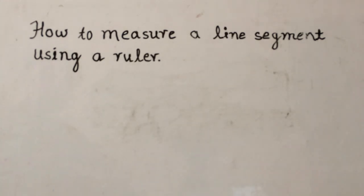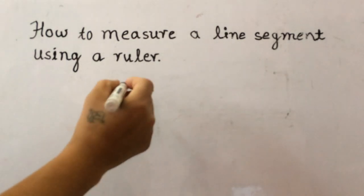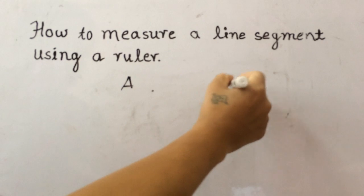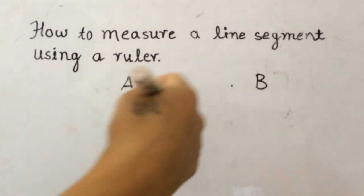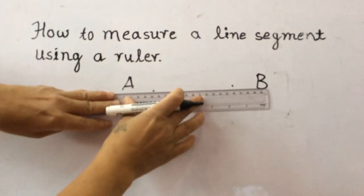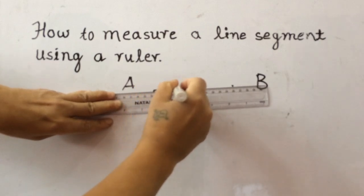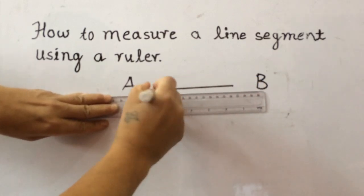Hello friends, today I'm going to show you how to measure a line segment. Let's make a point here. We can give the name point A. Now this is point B. Join these two points.